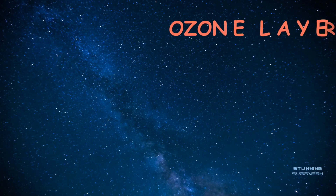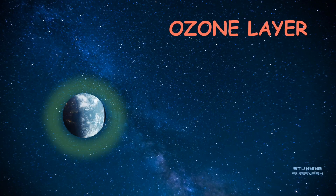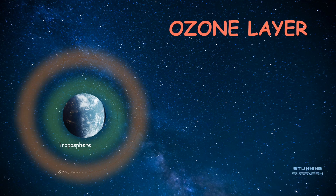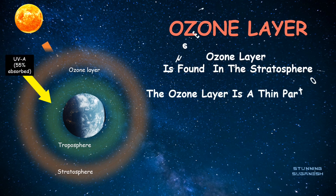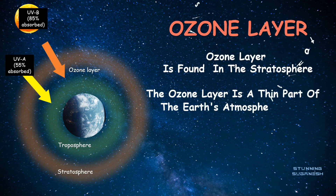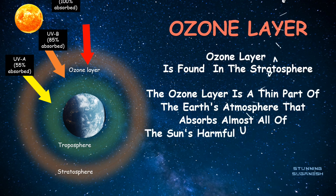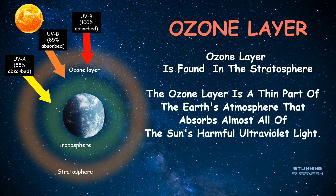The ozone layer is found in the stratosphere. It is a thin part of Earth's atmosphere that absorbs almost all of the sun's harmful ultraviolet light.